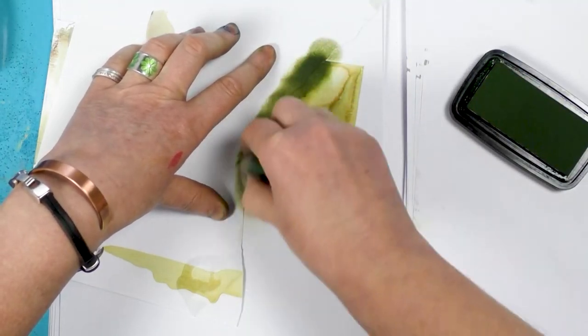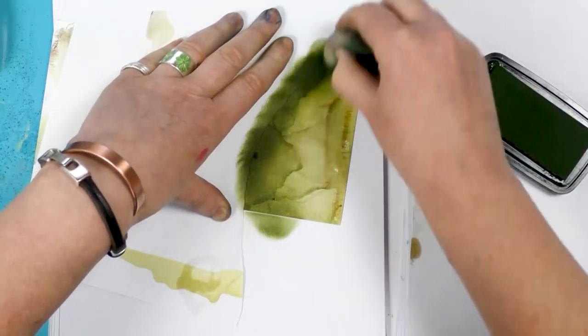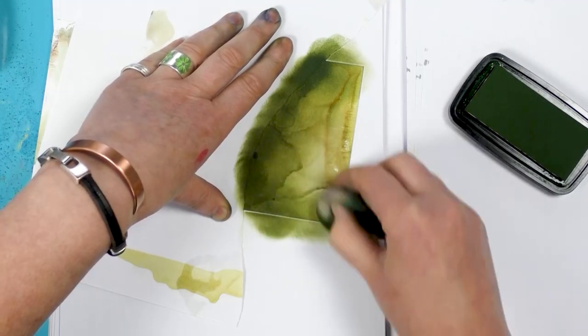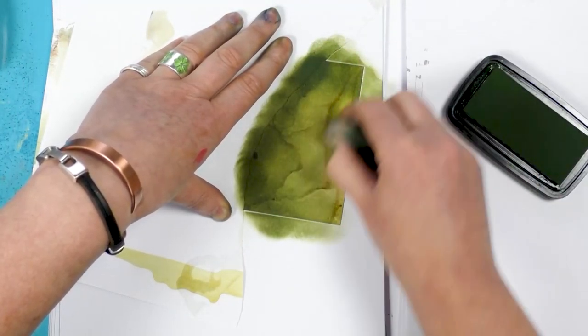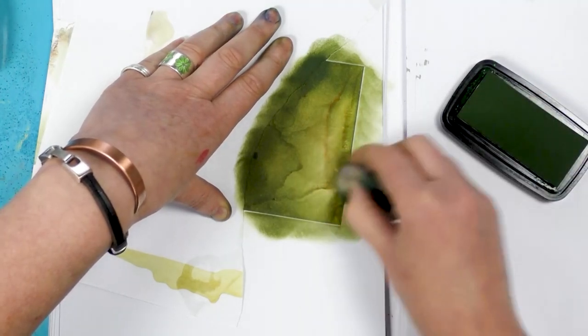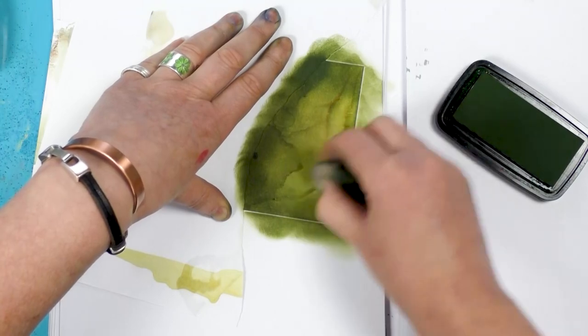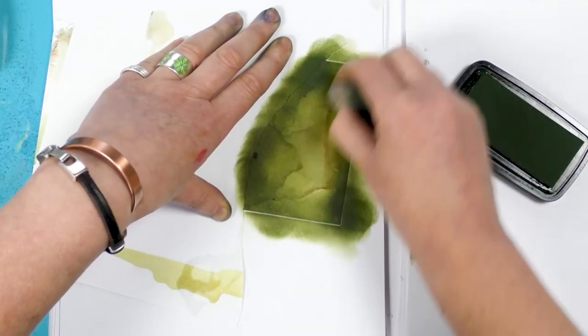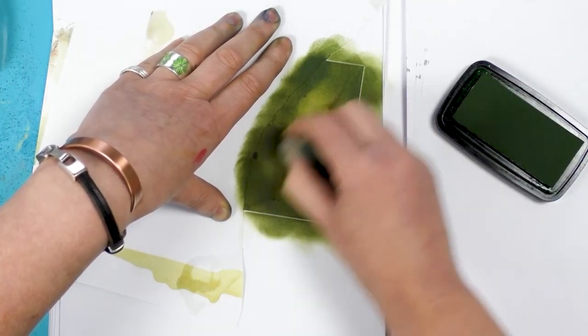Okay, so along the edge. And I'm going to cover most of this area in this green. Because I'm going to put the mica over the top, which will make it stand out the darker I make this area.